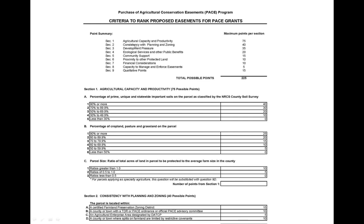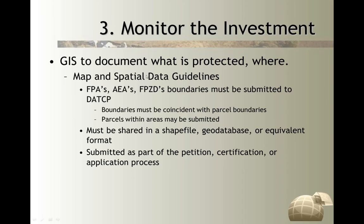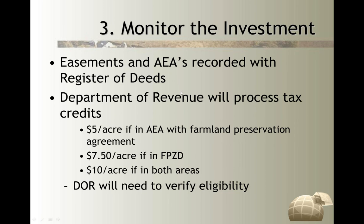Here's criteria in table format from our Department of Ag, Trade and Consumer Protection, where they have statewide criteria for selecting parcels suitable for the program for agricultural conservation easements. Anybody could be running this process for the entire state of Wisconsin at the parcel level based on this data: agricultural capacity, productivity, consistency, development pressure, and so on — all can be mapped with GIS. GIS is also used to monitor the investment — to document what's protected and where, and to understand if the investment in purchasing agricultural easements or providing farmers tax credits is actually paying dividends in protecting farmland. The state has stepped up here: every time a community, county, or township has a farmland preservation area, enterprise area, zone, or PACE, they need to share those GIS data sets with the department in shapefile, geodatabase, or equivalent format.